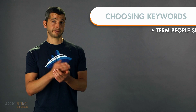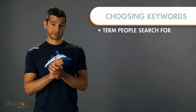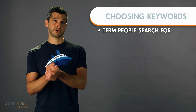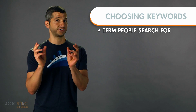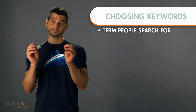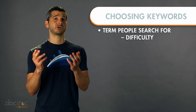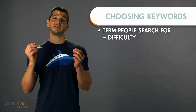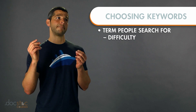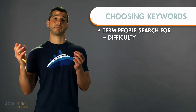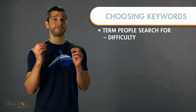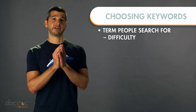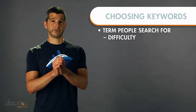So you have the actual keyword or the term — that's what people are actually searching for in the App Store. Those are the words you're trying to find. There's also difficulty, which represents the amount of other apps that are competing for this keyword that you're looking for.